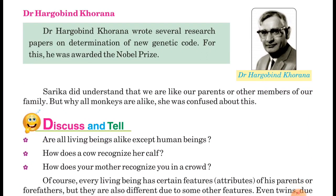That scientist's name is Dr. Hargobind Khurana. So let's read: Dr. Hargobind Khurana wrote several research papers on the determination of new genetic code. उन्होंने बहुत सारी खोज की थी और उसे अपने papers में लिखा था। उन्होंने genetic code पर खोज की थी — genetic code means अनुवांशिकी के संकेत।